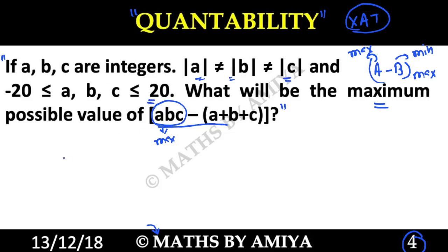We have the range of -20 to 20. So we can say the product A into B into C should be maximum if we take 20, 19, 18. Perfectly fine difference. And we want 20, 19, 18 difference should be as minimum as possible.